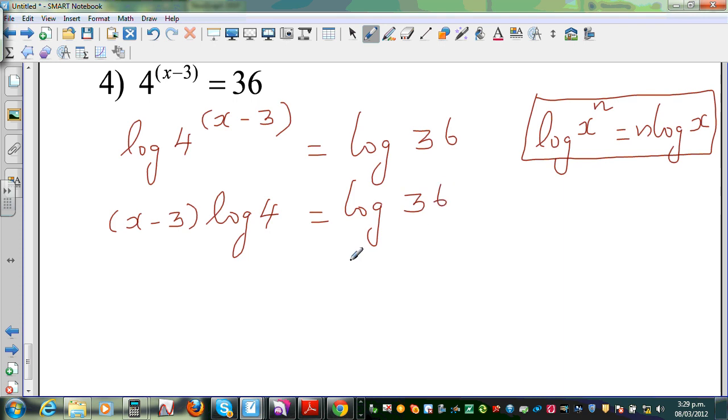Now dividing both sides by log 4. So I can say x minus 3 is equal to log 36 divided by log 4. Now, you may have a temptation to cancel the logs. But please don't do that. You can't cancel the log. Log 36 is a number. So log and 36 are not two different things. This is one whole thing. So you can't cancel the logs.